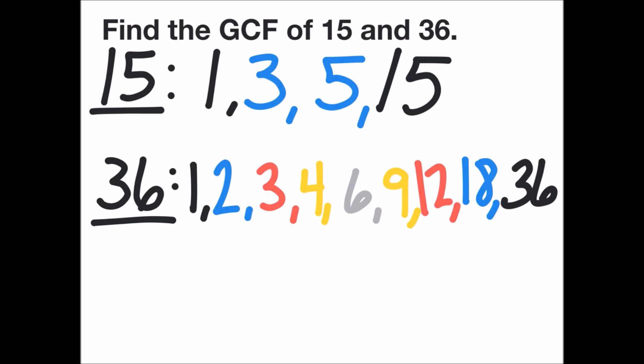Now I need to go through each list of factors and see what is the highest number found in both lists. I can see that 3 is the highest number common to both lists, so the GCF or the greatest common factor for 15 and 36 equals 3.